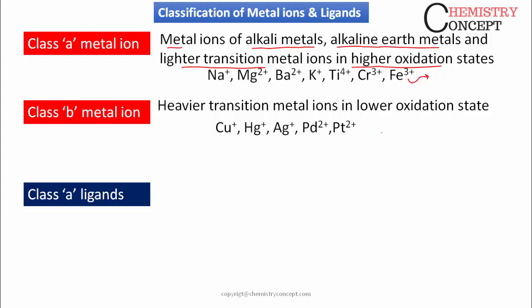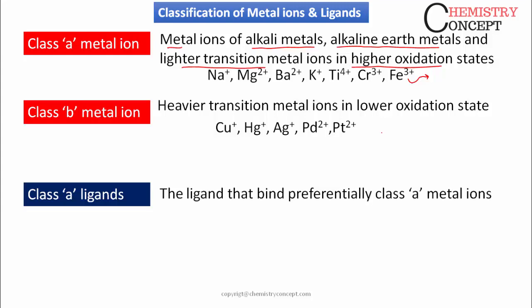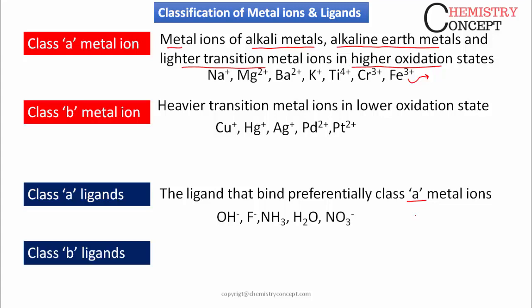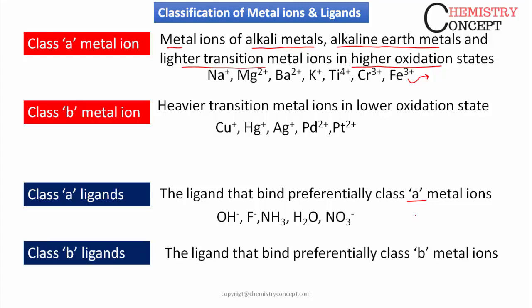Similarly, ligands are also classified. Class A ligands are the ligands that preferably bind to Class A metal ions — examples include OH⁻, F⁻, ammonia, and H₂O. Class B ligands are the ligands that preferably bind to Class B metal ions. This was the classification of metal ions and ligands.